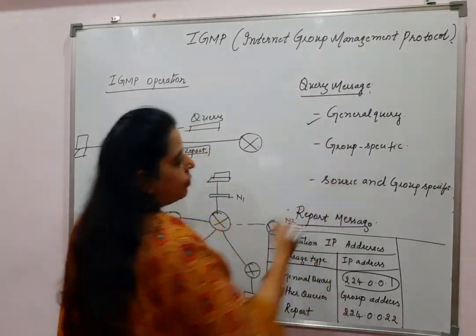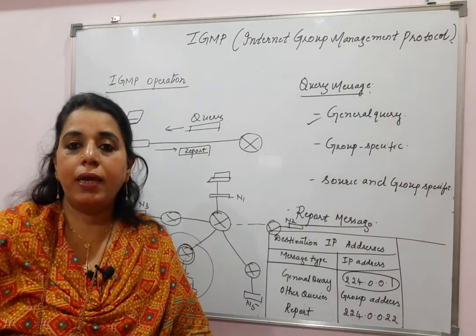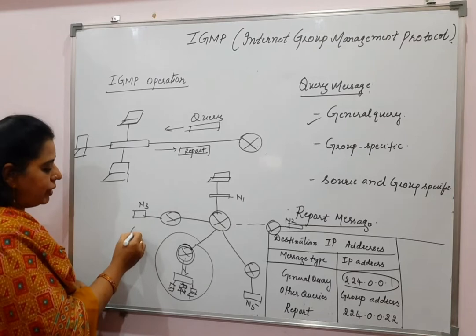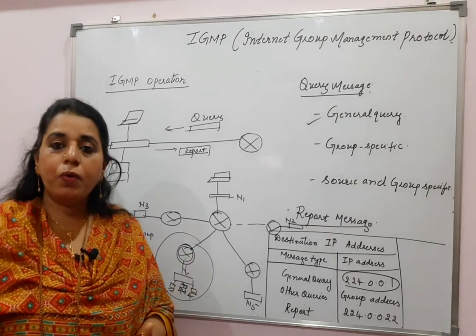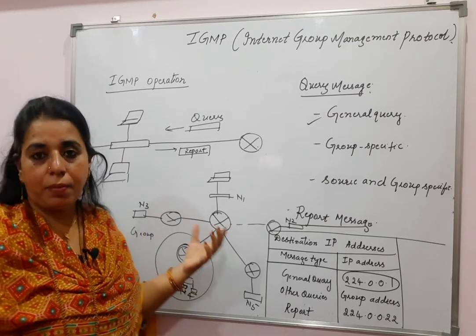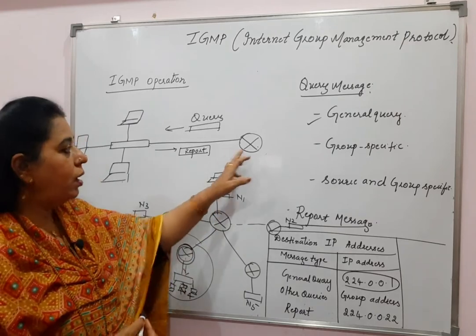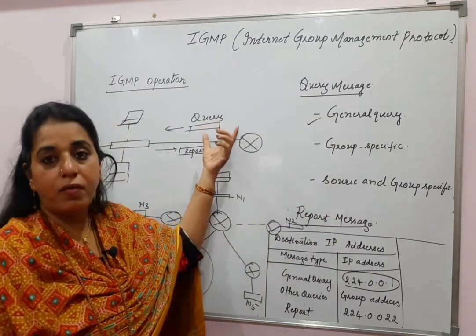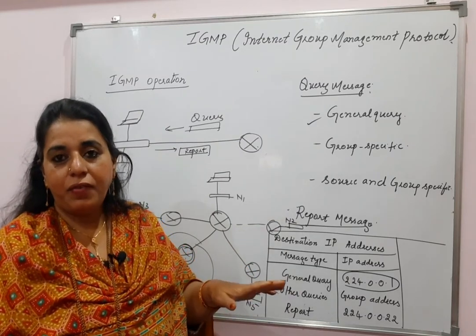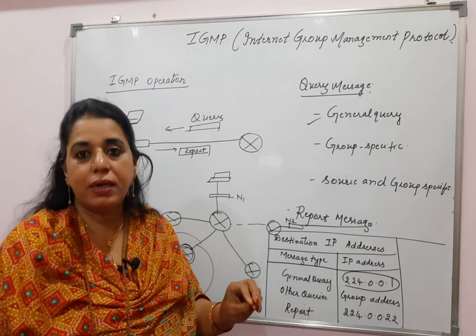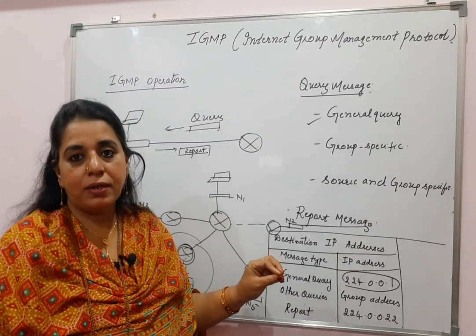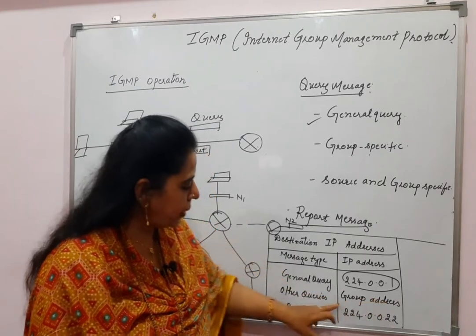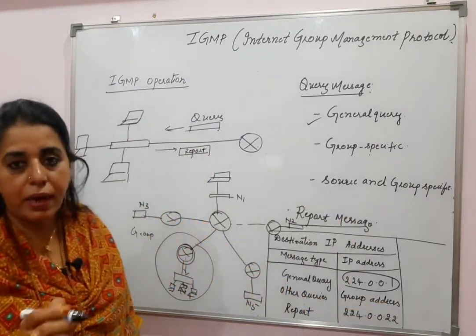The second type of query message is group specific — the router is trying to find out whether there are members existing in a particular group. If no information is received for group A, the router sends a group specific query using the multicast address of that group as the destination. The third type is source and group specific, where the router checks whether members are interested in receiving messages from a particular source — using the S,G (source, group) combination.